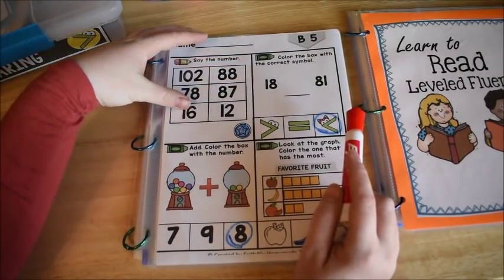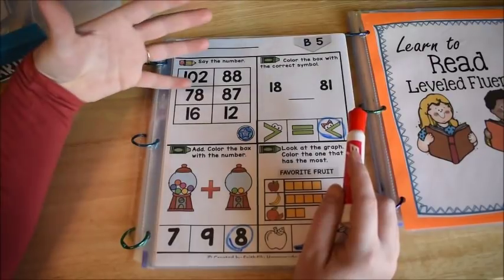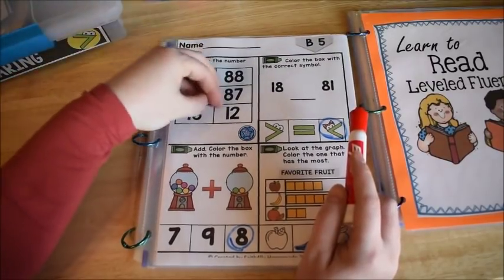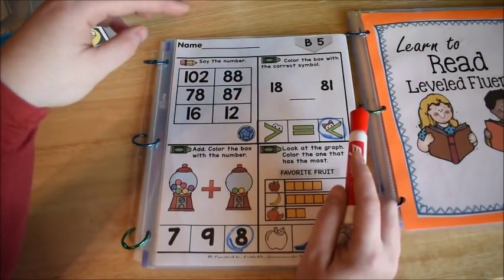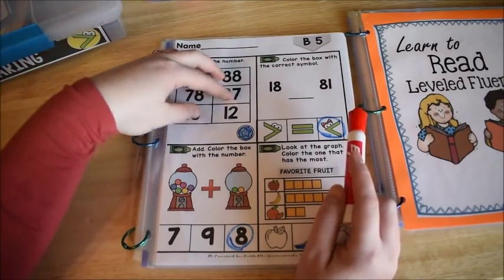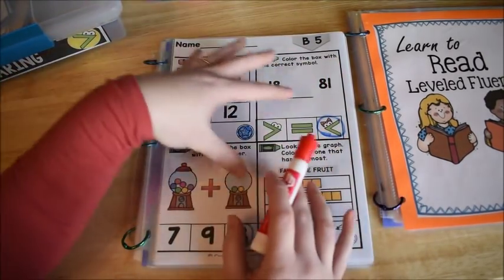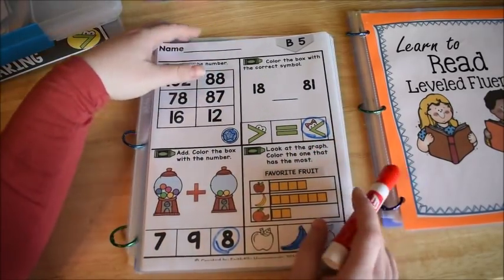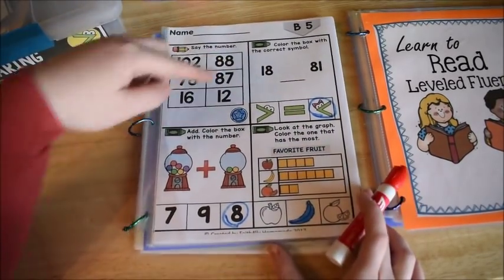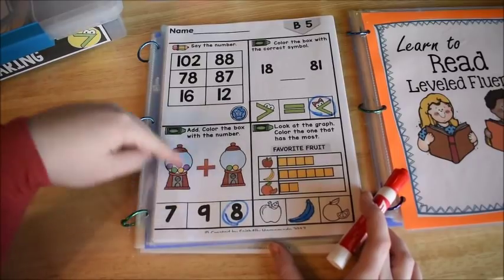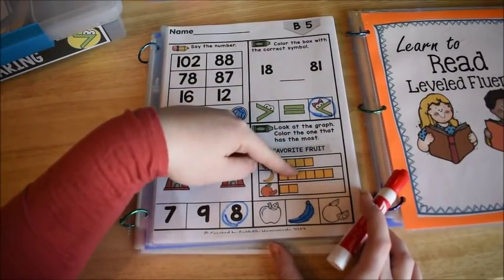This gives you an opportunity if they do make a mistake that you can correct them. So every single day they are practicing numbers, just number recognition. And then for example, on this particular day, they would also do comparing numbers. They would do addition in this box, and then they would do some graphing in this box.